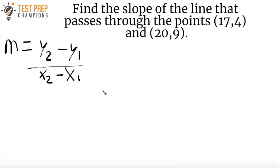How do you really maximize your score on the GED test? You can start by making sure you understand how to calculate the slope without using a graph. It's actually simpler to do it without a graph because the coordinates are already given to you, so there's less chance of error. Here's an example problem — pause the video and test yourself. Find the slope of the line that passes through the points (17, 4) and (20, 9).